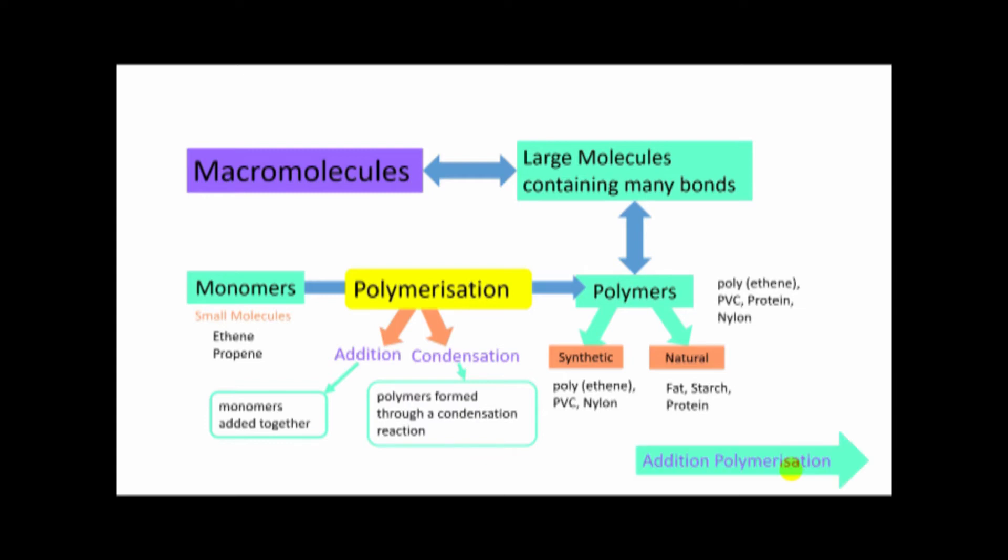Addition polymerization is where the polymer is formed from monomers added together, where no other substance is produced. Addition polymers like ethene - from ethene, polyethene is produced. Polyethene is the polymer, ethene is the monomer. The use of polyethene is carrying bags.